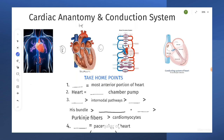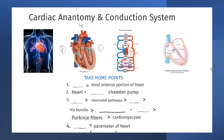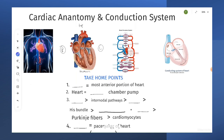Going between the right atrium and the right ventricle is what we call the tricuspid valve. From the right ventricle going outwards, you have an artery — this is the pulmonary artery — and this is the pulmonic valve. As blood goes out to the lungs, it'll come back to the left side of the heart and pass through the mitral valve to the left ventricle, and eventually make its way out through the aorta.